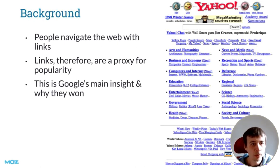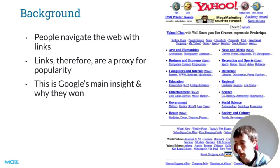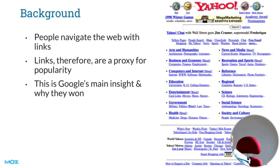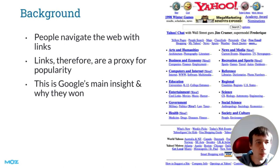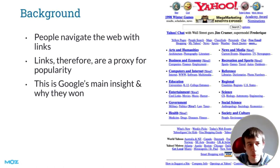This is a massive oversimplification, but this is kind of why Google won. Google recognized this fact and came up with an innovation called PageRank, which made their search engine better than other search engines, and which every other search engine subsequently went on to imitate.